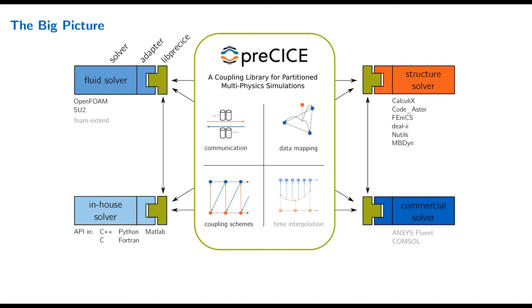So — fundamentals. Let's first look at the big picture. You've probably already seen this image on our website. There is a lot of information here, so let's digest it one by one. In principle you see four coupled codes: a fluid solver, a structure solver, an in-house solver, and a commercial solver. The first thing to understand is that preCICE is a library — the coupled solver, here the fluid solver, calls preCICE. We call this a library approach.